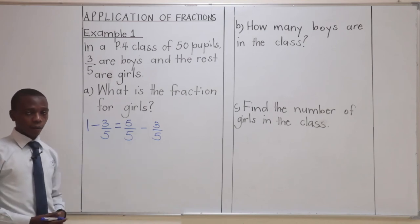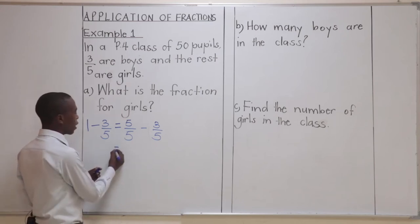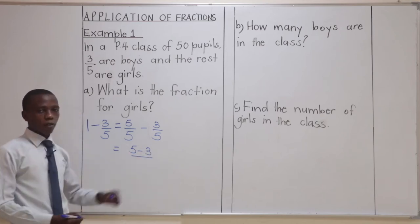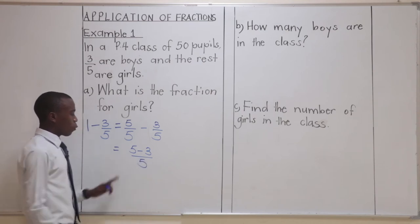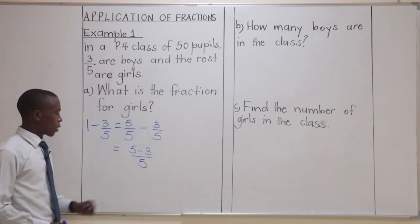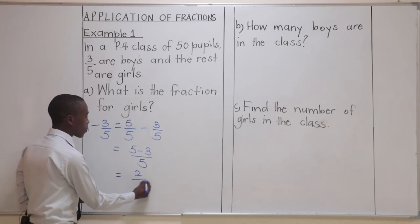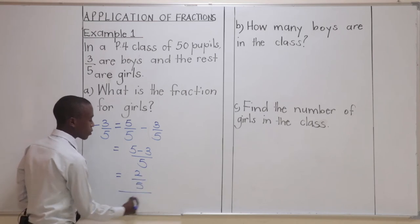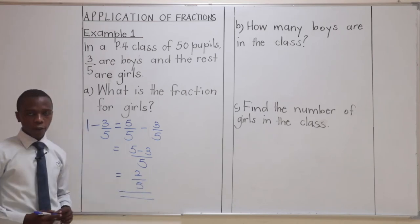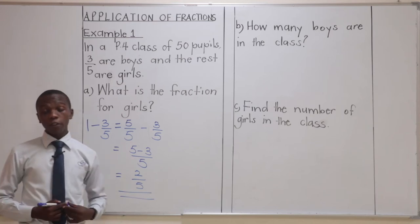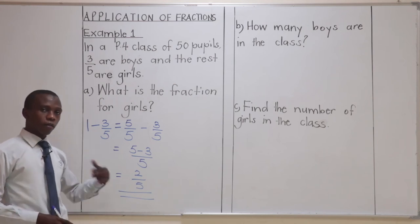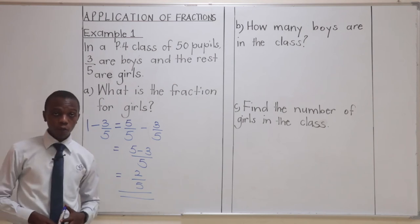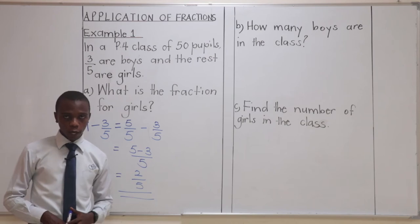Like any other subtraction of fractions, we'll have here the numerator is subtracted, 5 minus 3, out of one denominator here, which is 5. When we have 5 minus 3, the difference is 2. Therefore, we are having our answer as 2 out of 5. This means the fraction for the girls is 2 out of 5. If you get 2 out of 5 and you add 3 out of 5, which is the fraction for the boys, you'll get 5 out of 5, which is a whole.